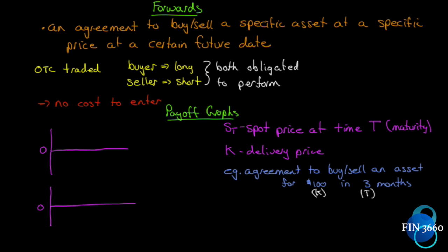In this introduction I'll cover some terminology we'll explore in more detail later. Starting with forward agreements: a forward is an agreement to buy or sell a specific asset — often called the underlying asset — at a specific price, referred to as the delivery price (for options we'll say exercise price), at a certain future date called the delivery date. The price is agreed on today, at the time the contract is entered, but delivery occurs at a future date.